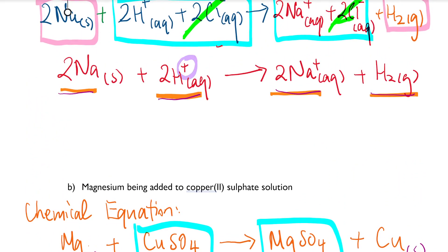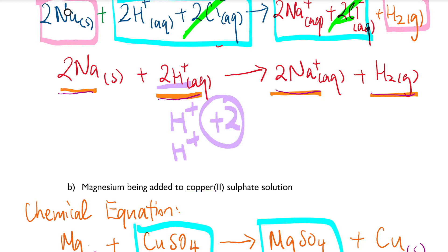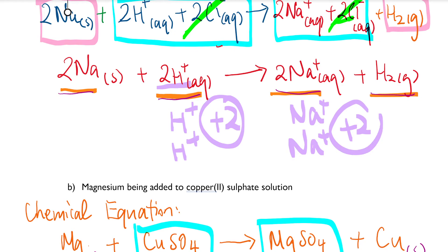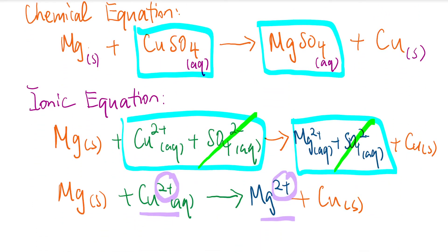Going back to the previous question — a lot of people think 2H⁺ is just a 1+ charge. No. Remember: 2H⁺ means you have 2 hydrogen ions, so the overall charge is +2. On the right-hand side, 2Na⁺ means there are 2 sodium ions, so that charge is also +2. The charges on the left and right-hand sides are going to match — this is another way to verify whether you cancelled out the right ions.